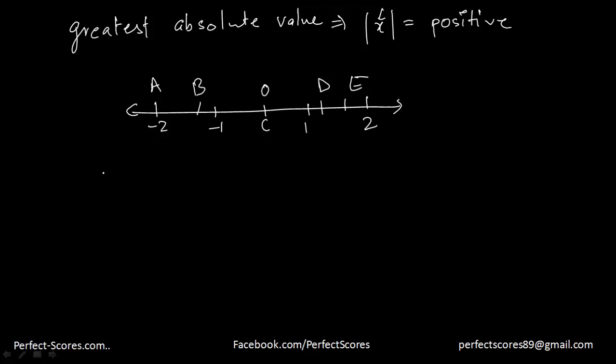So we are going to plug in numbers. Modulus of A is equal to modulus of negative 2, which is 2. Modulus of B is, let's say, modulus of negative 0.9... sorry, negative 1.9, which is equal to 1.9. Modulus of C is equal to modulus of 0, which is 0.